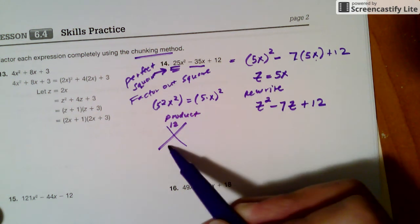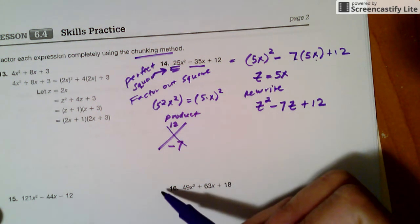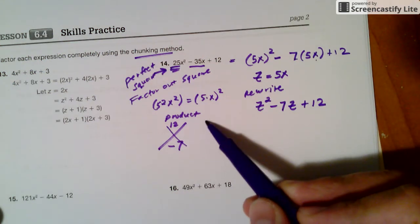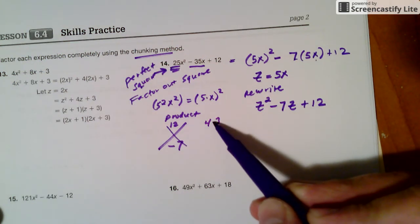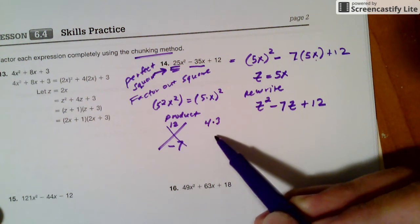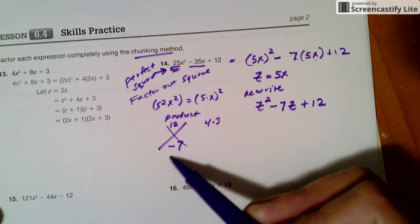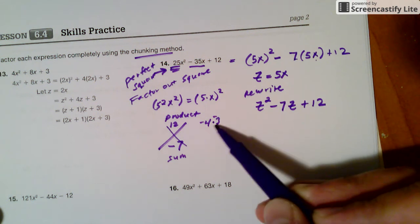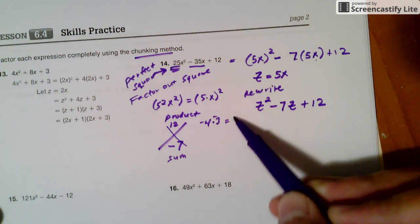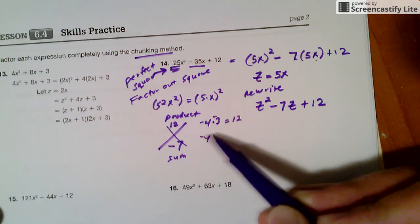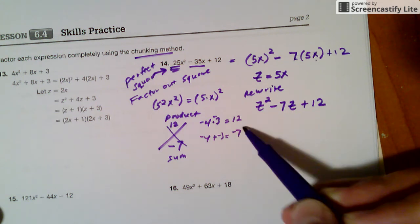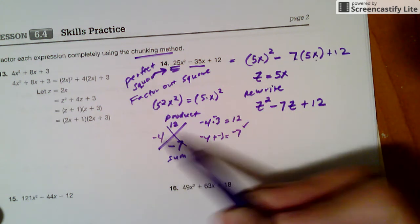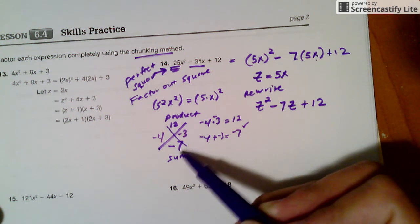and add to be negative 7? So I want to start checking them again. Let's try 4 times 3. And since they have to add to be negative 7, the sum, I'll have to make them both negative. Negative 4 times negative 3 is positive 12, but negative 4 plus negative 3 is also negative 7. So it works out. It's negative 4 and negative 3. Those are the two numbers I'm looking for.